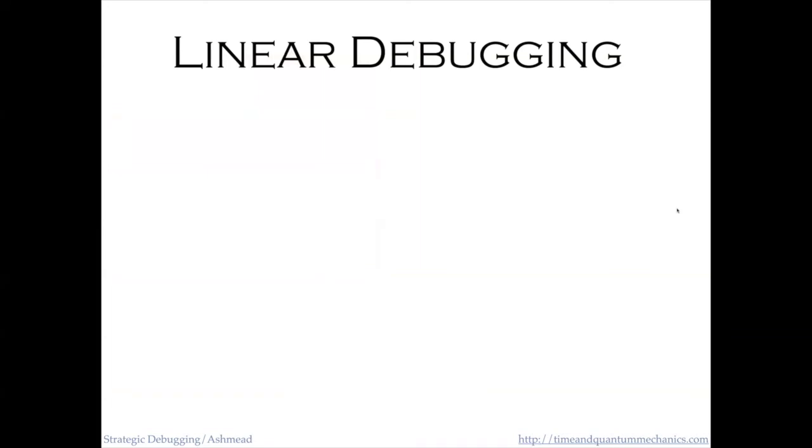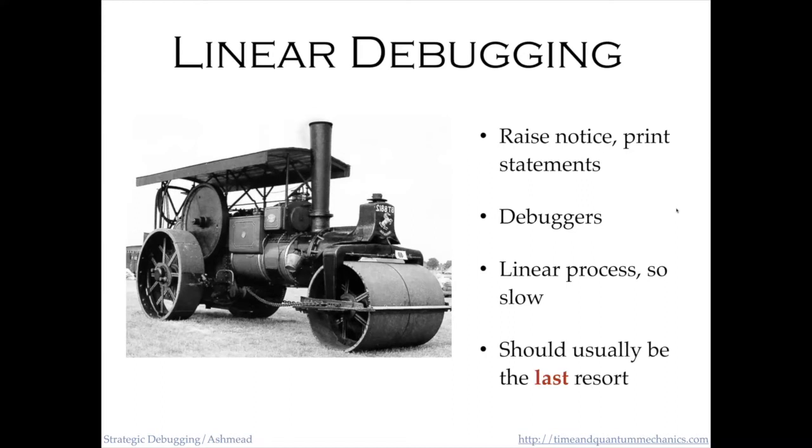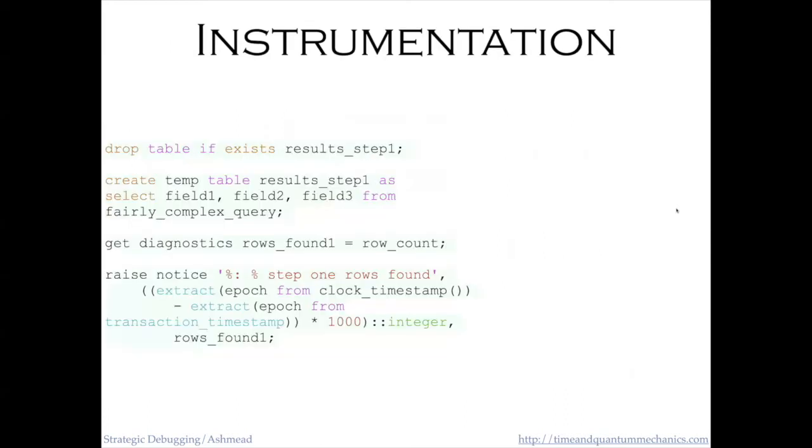The second and most common kind of debugging strategies is linear debugging. Get off the steam roller and just flatten the code. You can put in a raised notice. You can put in print statements. There's actually a debugger for the Postgres procedural language. Not much used, but it exists. This is a linear process, so it's slow. If the bug is at the end of your module, it's even slower. It should usually be the last resort. My first resort when I see a module with a problem is to stare at the module and ask, can I see it by inspection? But you do have to know how to do linear programming. Sometimes that's what you're stuck with. Or maybe you just don't understand the particular language well enough and you're learning the language at the same time that you're solving the problem.